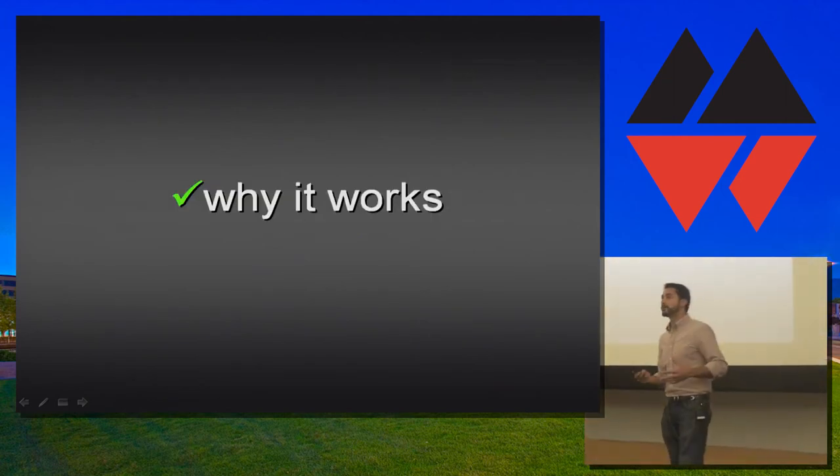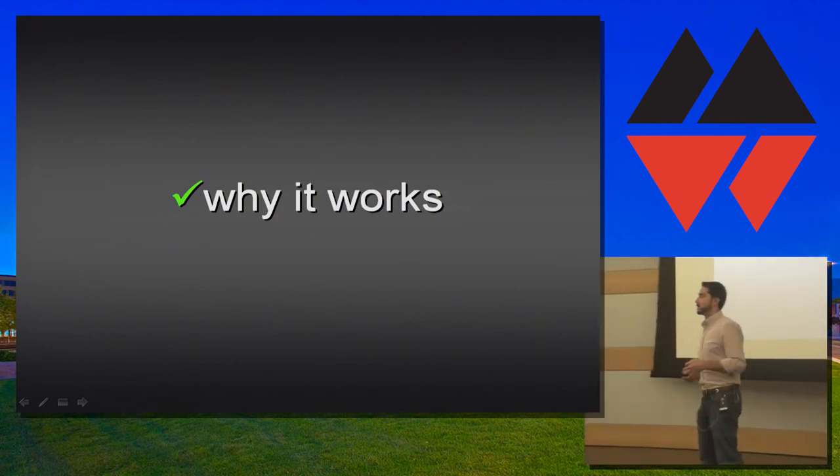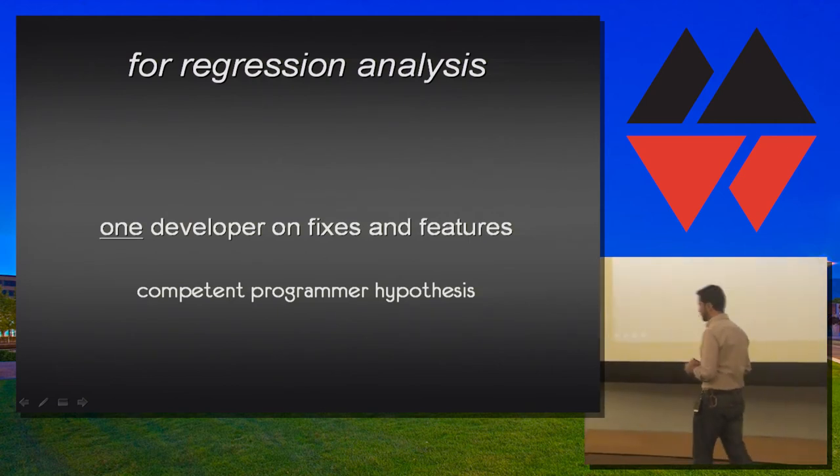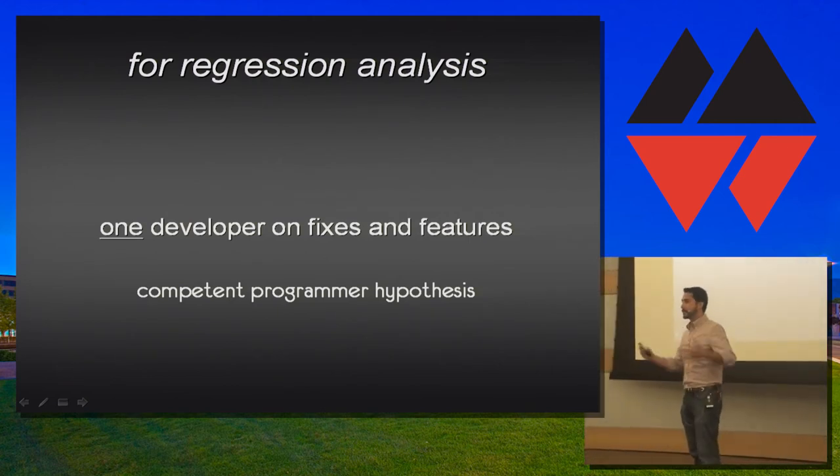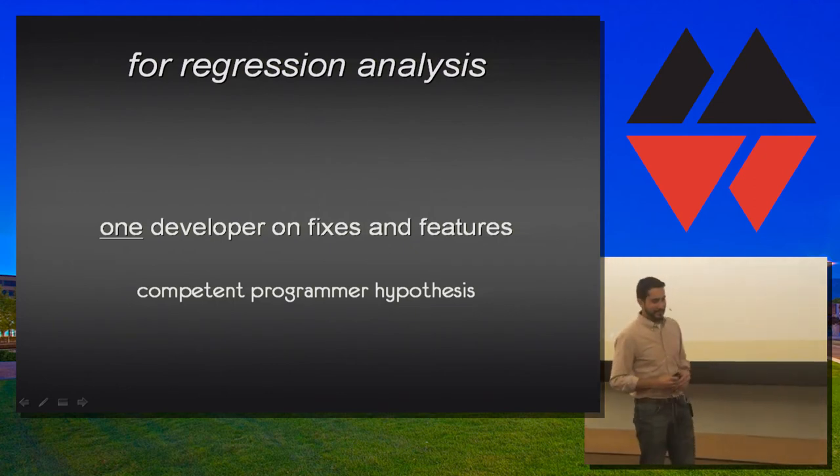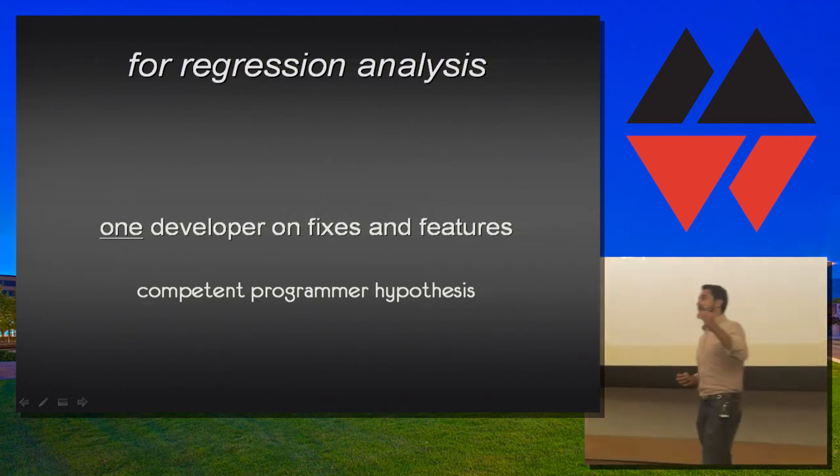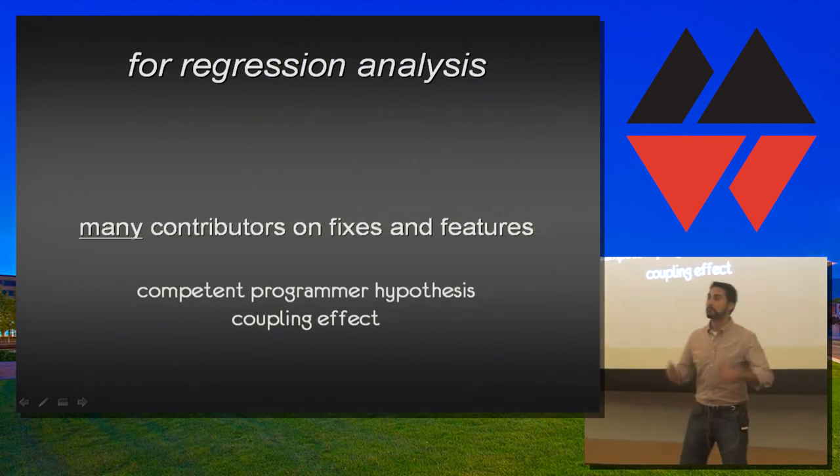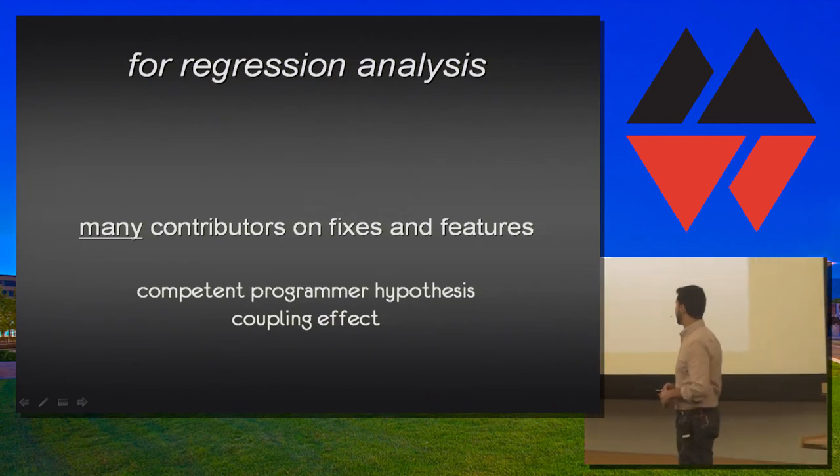So, this has also been shown by decades of research to be a valid hypothesis. That's why these two are the pillars of mutation analysis. In terms of our variable K, the mutation quantity, we only need between two and five mutations to capture this area of bugs, this class of bugs. So, we've seen now why mutation analysis works, and why it's a perfect match to assess the regression detection capability of our tests. Because, if we have one contributor committing code for a bug fix or a feature, then we have the competent, hopefully competent, programmer hypothesis in effect. And then, to a certain degree, the coupling effect. Now, if we compound that with many contributors, we have both hypotheses in effect.